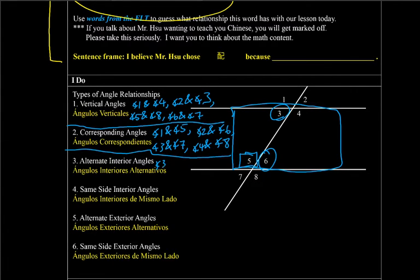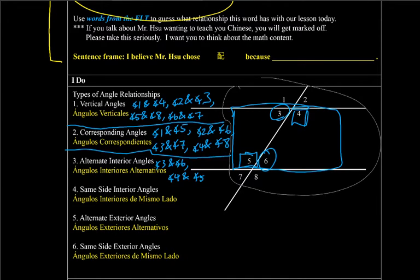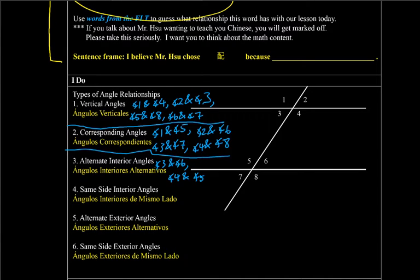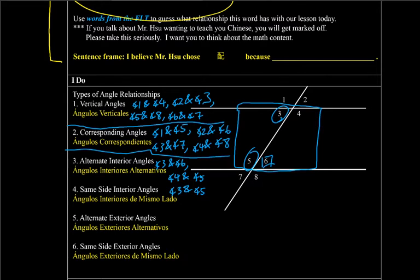So we have angle 3 and angle 6. How about for 5? Same side would be 3 and 5. And then 4 and 6. Mismo lados.